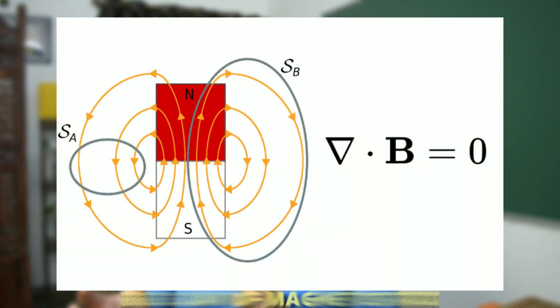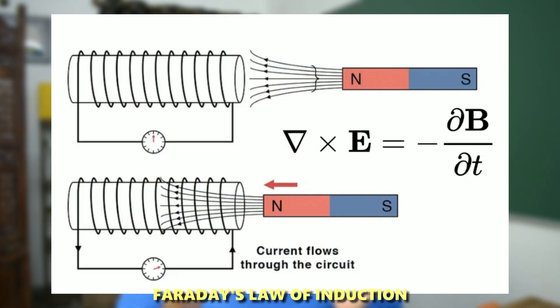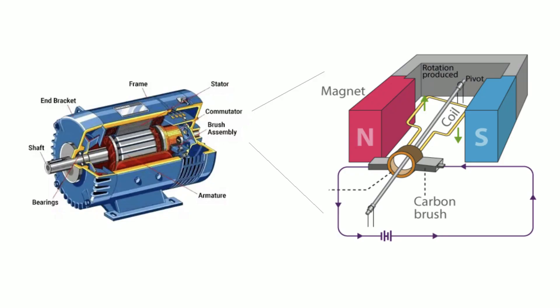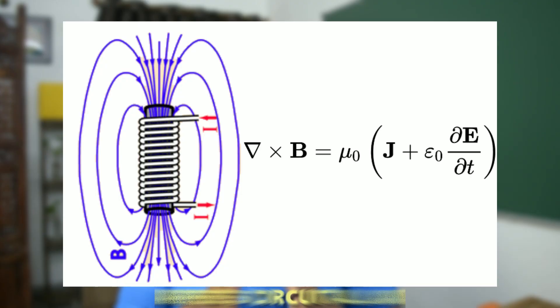The second is Gauss's Law of Magnetism, which tells us about magnetic field lines and how magnetic monopoles do not exist — if there is a north pole there is always a south. Third is Faraday's Law of Induction, which says how a changing magnetic field creates an electric field. This is very important because it lies at the heart of electricity generation — electricity is essentially generated by changing a magnetic field in the presence of a closed loop, creating electric current.